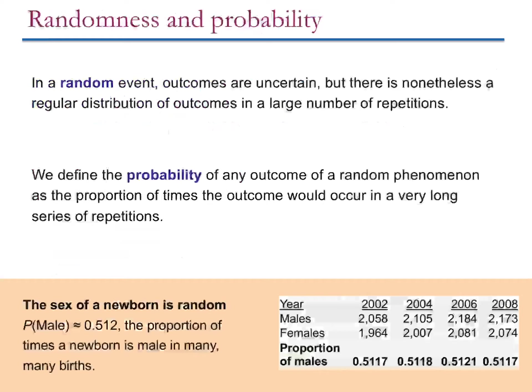We define that likelihood as the probability. The probability of an outcome of a random phenomenon is simply the proportion of times that event would occur if we repeat it over and over again.